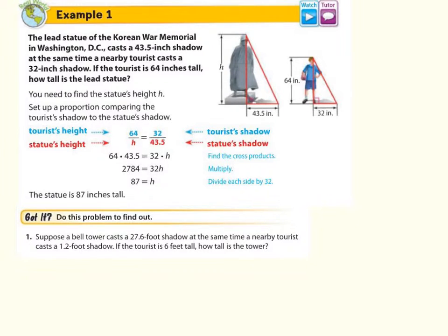So what they do is they set up a proportion of the tourist's height as 64 over the statue's height of h, and then the tourist shadow and the statue shadow. So basically, your first fraction is all the heights and then your second fraction is corresponding with the shadows. Once they set up a proportion, they cross multiply and they solve for h and they find that the statue is actually 87 inches tall.